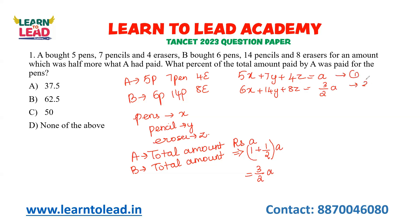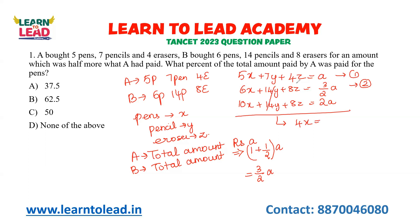Take equation 1 and equation 2. Multiply the first equation by 2: I get 10X + 14Y + 8Z = 2A. Now if you subtract equation 2 from this, the Y and Z terms cancel, giving 4X = 2A − 3/2 A = 1/2 A. So 4X = 1/2 A, meaning X = 1/8 A.